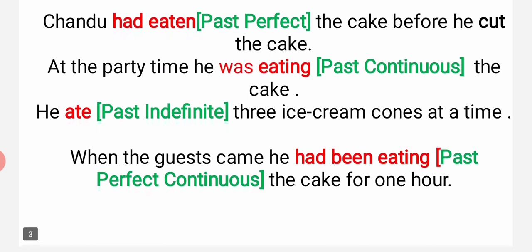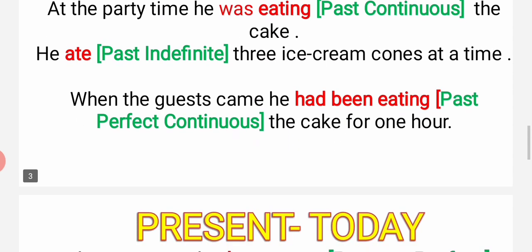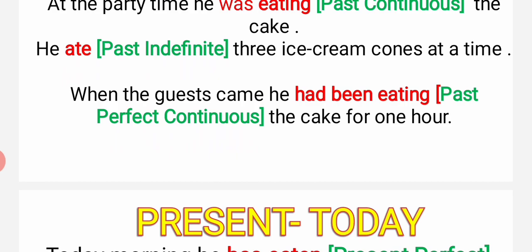Past perfect 'eaten'. At the party time, he was eating the cake. (Paatne time me bhi wo khaa raha tha.) That is continuous - khaa raha tha. He ate three ice cream cones at a time - that is past indefinite. When the guests came, he had been eating the cake for one hour. That is past perfect continuous.